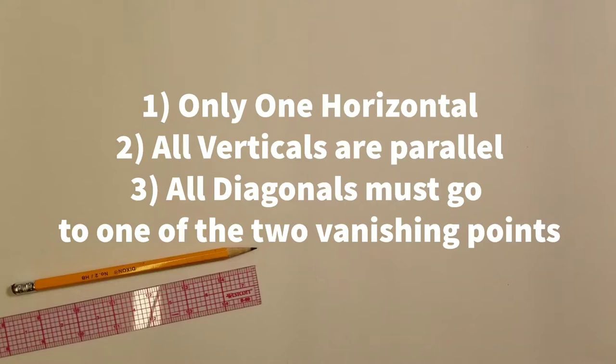The second rule is all vertical lines are parallel. The third rule is all diagonal lines go to one of the two vanishing points. So anytime you make a diagonal line, it must shoot one of the two vanishing point targets.